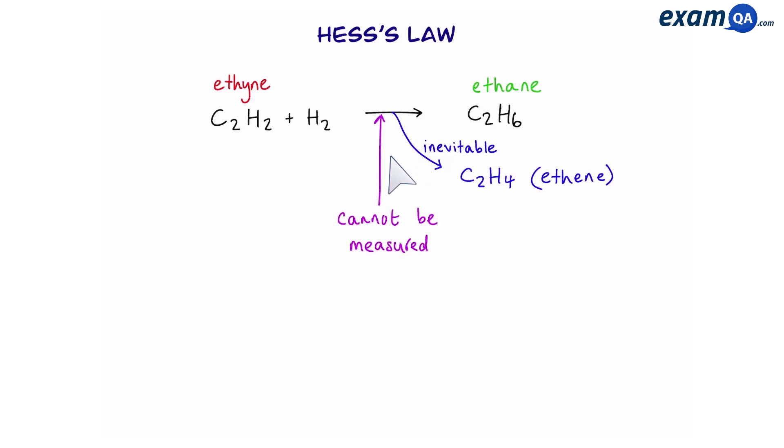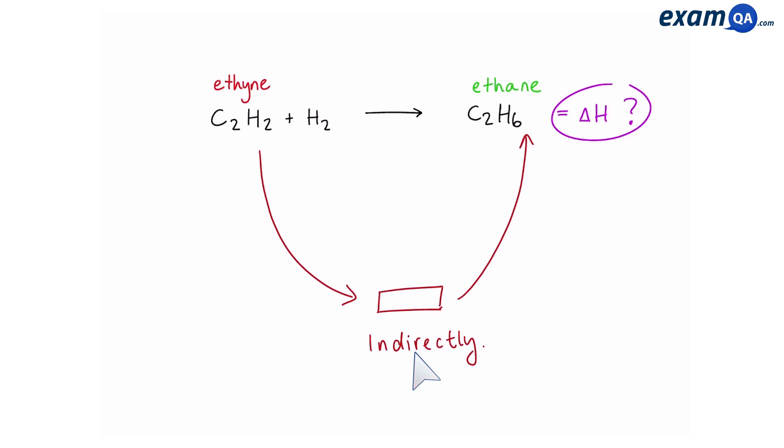That means the reaction where ethane only turns into ethane cannot be measured. So does that mean we can't get an enthalpy change for this reaction? Well, it can't be measured directly. However, we can still work out the enthalpy change from ethane to ethane indirectly using Hess's law.